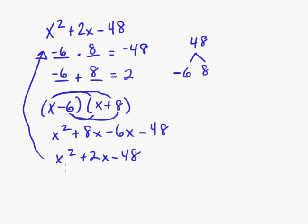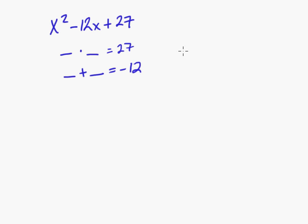Okay, let's do one more where they're both negative. So let's say we have x² - 12x + 27. This one can get a little tricky because what times what equals 27 and what plus what equals negative 12. Well, if we look at the factors of 27, we have 1 times 27 and 3 times 9.